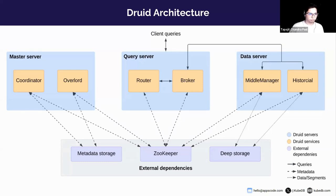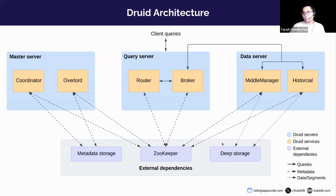There are two kinds of data servers. The historical node handles storage and querying on historical data; it downloads segments from deep storage. When we query something, the necessary segment is loaded from deep storage into the historical node and then queried. The middle manager service handles ingestion of new data into the cluster, reading from external data sources and publishing new Druid segments.